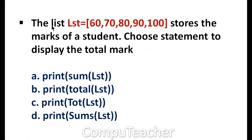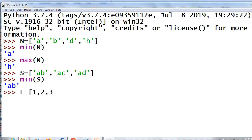Next question. The list LST = [60, 70, 80, 90, 100] stores the marks of a student. Choose the statement to display the total mark. Options: print sum(LST), total(LST), tot(LST), sums(LST). Answer is option A, sum(LST). There is no function called total, tot, or sums related to list. Example: L = [1, 2, 3], print sum(L) gives 6. Note it is sum(L), not L.sum().